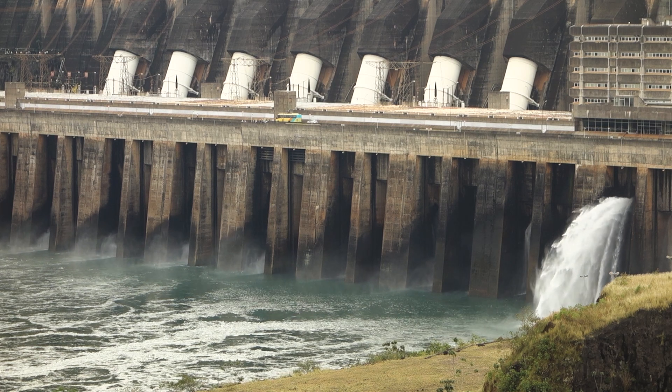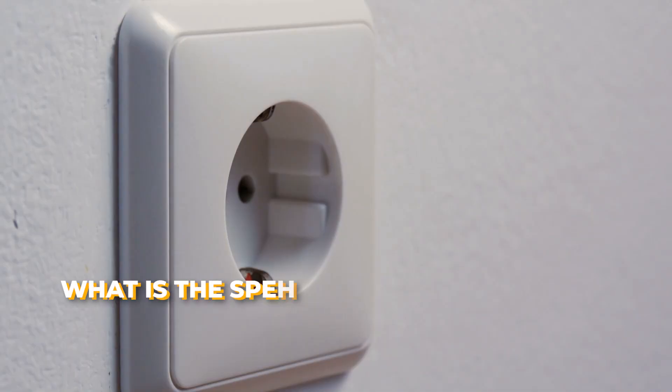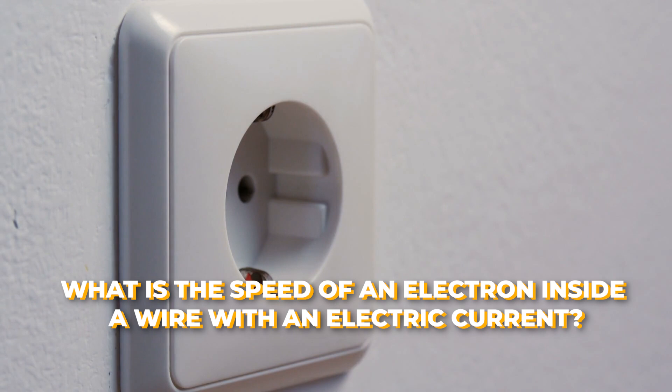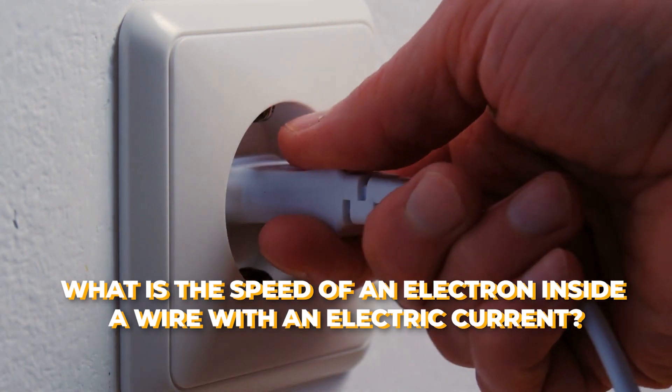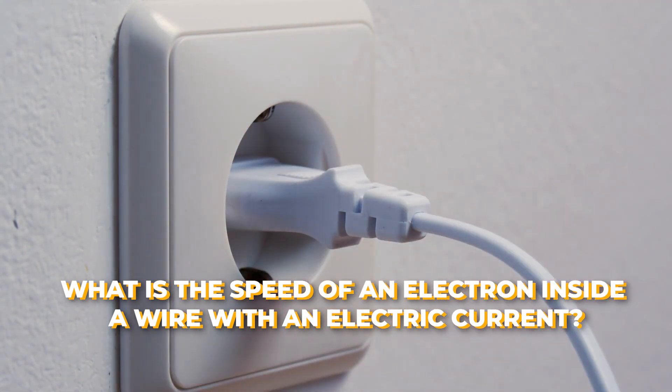Perfect! So, now we have all the ingredients to answer the three questions from the beginning of the video. First, what is the speed of the electrons inside a wire with an electric current? To answer this,